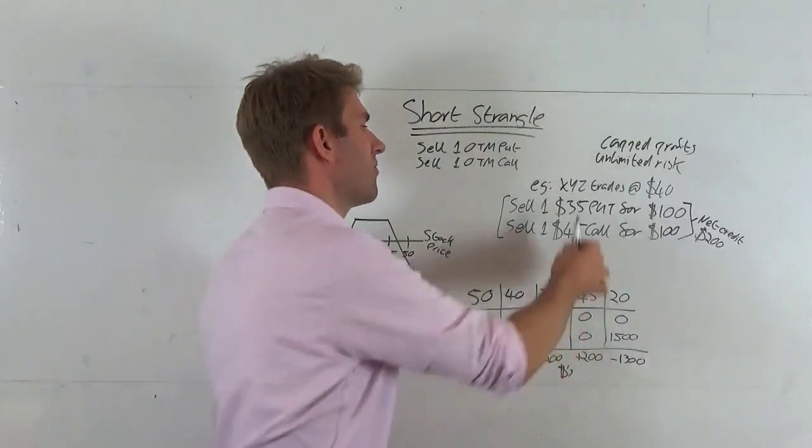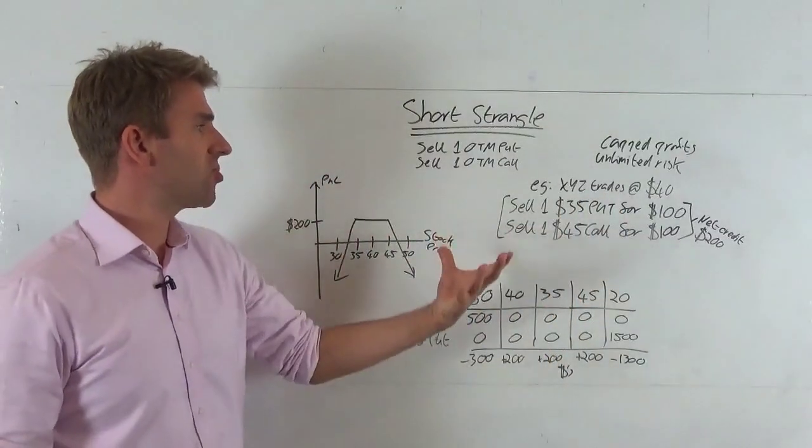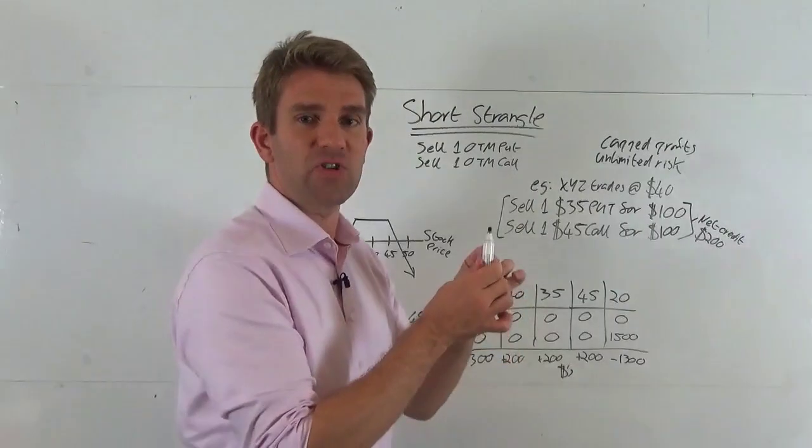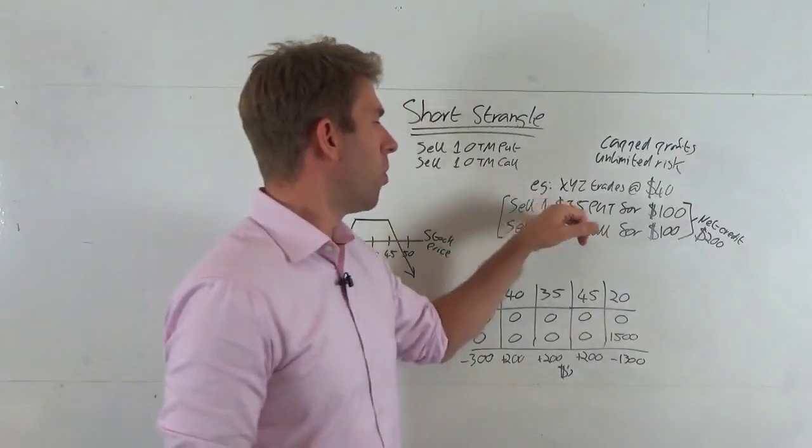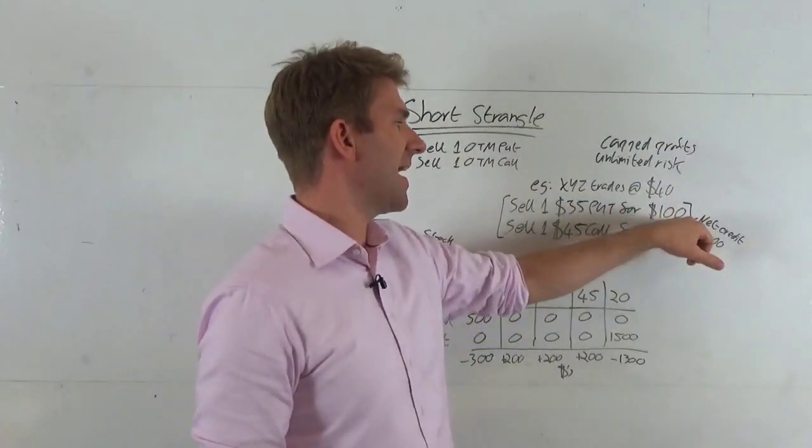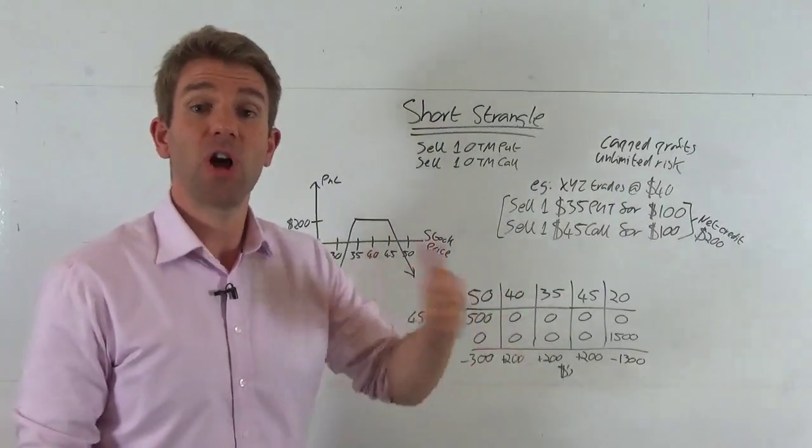Let's imagine we've got XYZ and it's trading at $40. How do we construct this? Let's say we want a range something five dollars either side of it. What we do is we sell one $35 put and that's currently trading at $1.